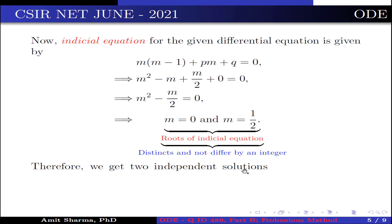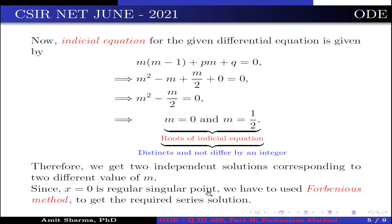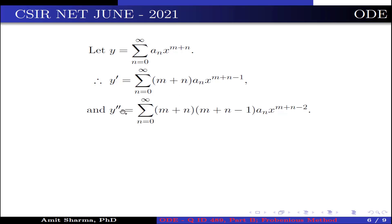Therefore, we get two independent solutions corresponding to the two different values of m. Since x = 0 is a regular singular point, we use the Frobenius method to obtain the required series solution. Let y = Σ(n=0 to ∞) aₙ x^(m+n), y' = Σ aₙ(m+n) x^(m+n−1), and y'' = Σ aₙ(m+n)(m+n−1) x^(m+n−2).